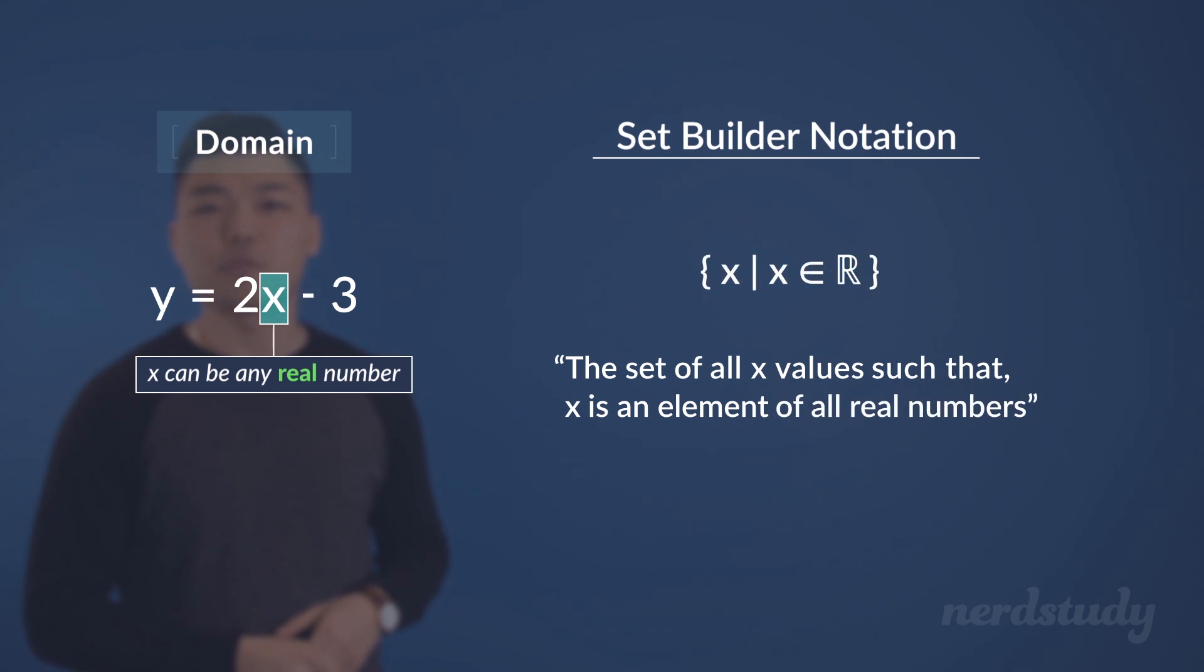of all real numbers. And there it is. To say something is an element of a real number, is the same as saying that the number belongs to the category of real numbers. What this is basically saying is that our domain, or all possible x values, can be any number that is within the category of real numbers.